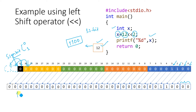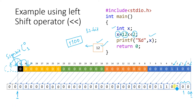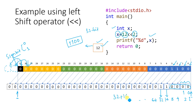Now we calculate the decimal equivalent of the resulting 32-bit value. The relevant set bits are at the 32-bit position and the 16-bit position, both equal to 1. So the calculation is 32 plus 16, which equals 48. Therefore, the answer of this program is 48. Using the shortcut method: for left shift, multiply the value by 2 to the power n, where n is the number of bits shifted. So 12 × 2² = 12 × 4 = 48, confirming our answer.